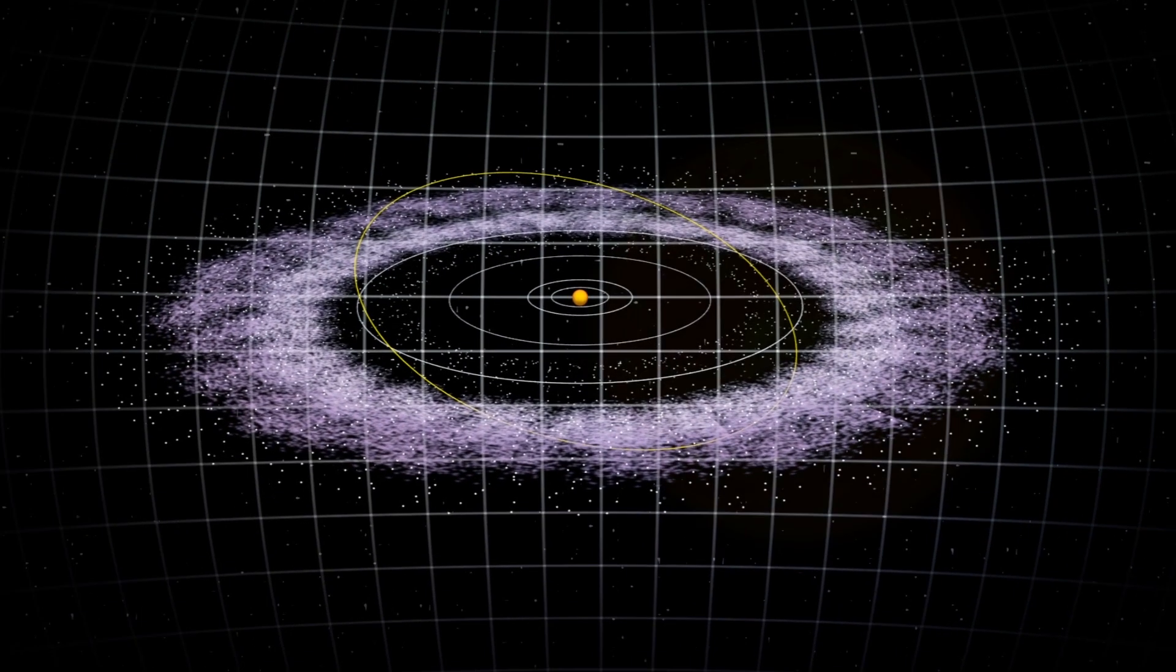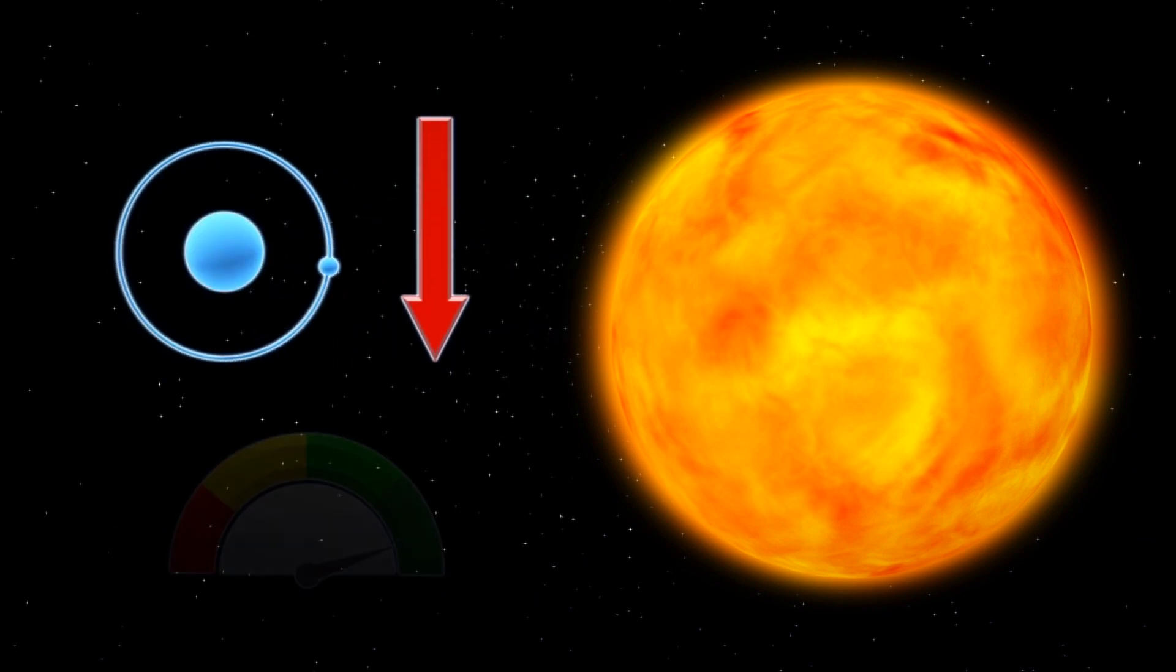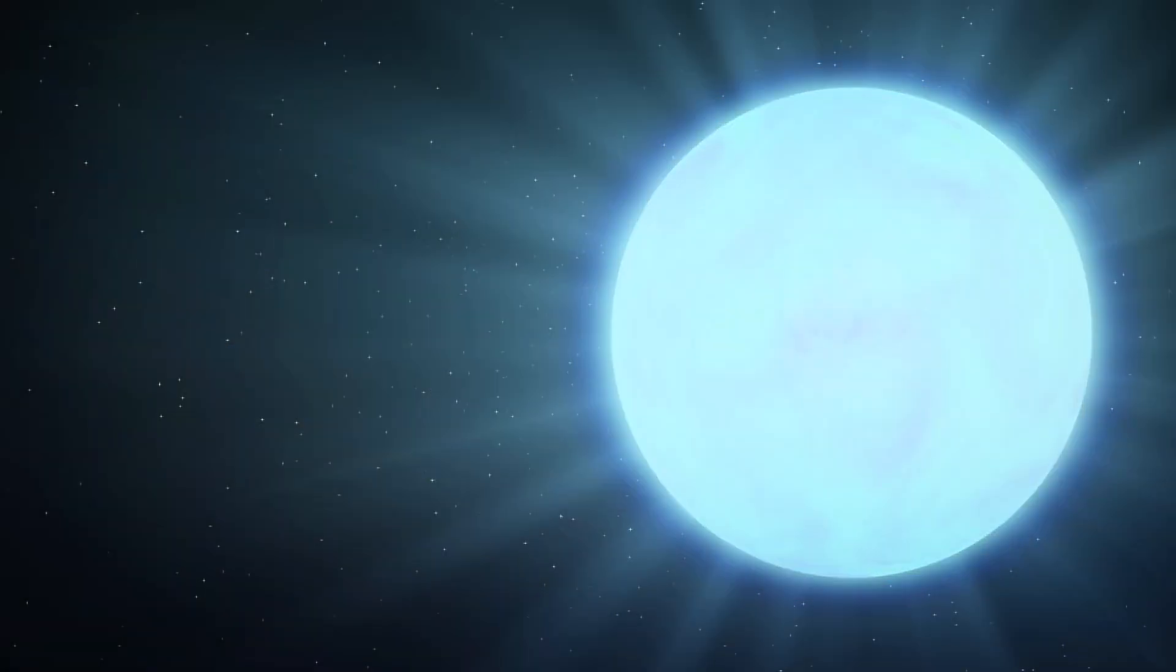Billions of years from now, the Sun will exhaust its hydrogen fuel and enter what astronomers call the giant branch phase. The Sun will grow bigger by hundreds of times, while its luminance and radiation output increase by thousands of times.